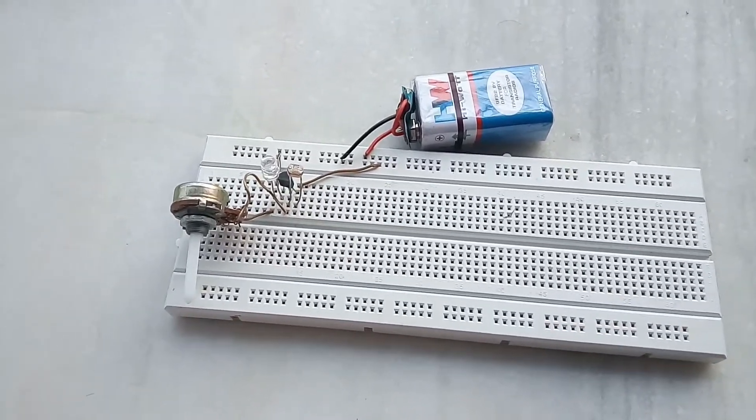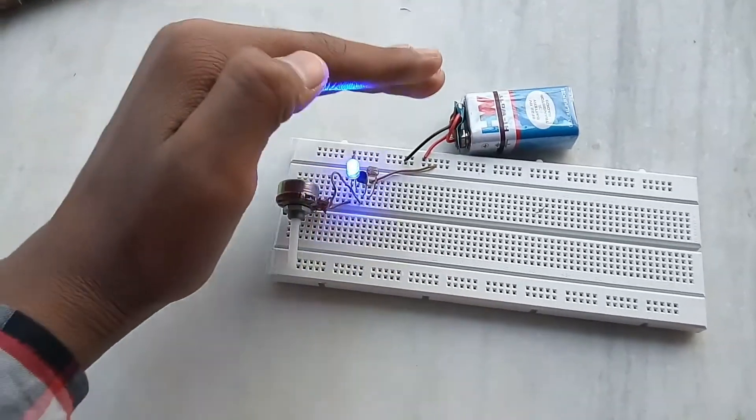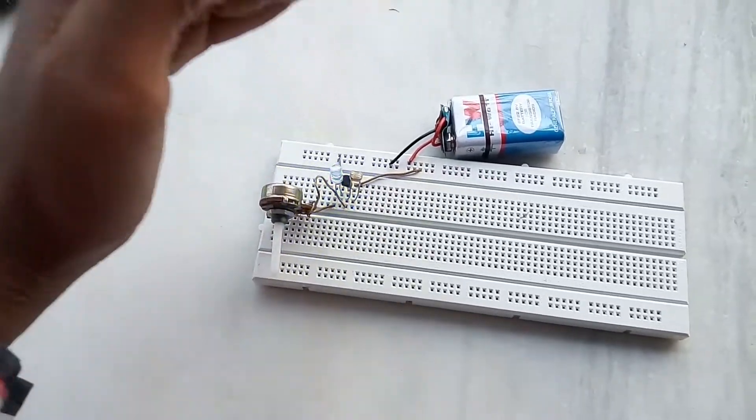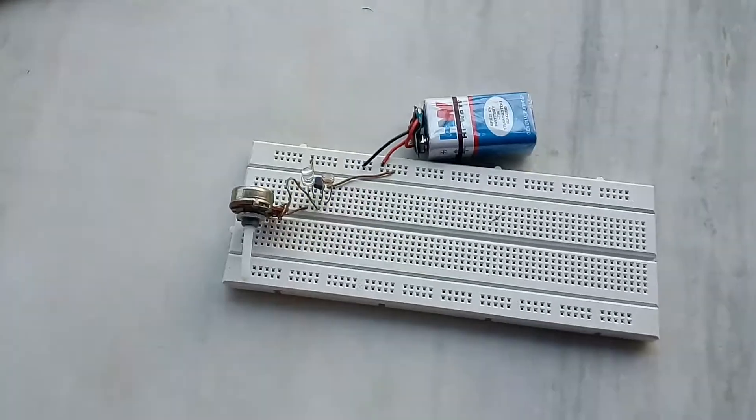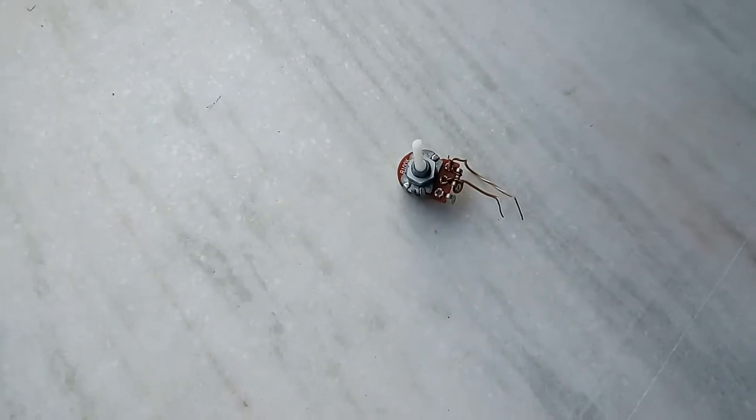Hello welcome to sensor technology. Today in this episode I will show how to make a dark sensor circuit. Let's get started. The components needed are a hundred kilo ohm potentiometer, a BC 547 transistor.